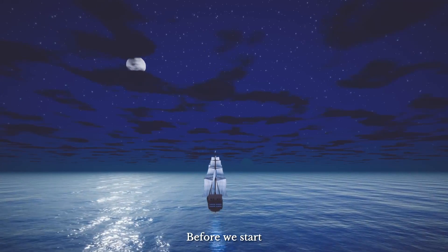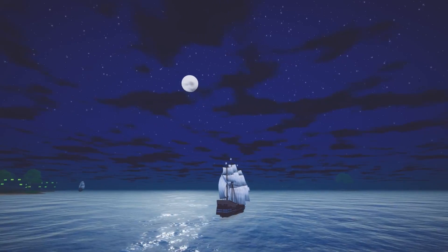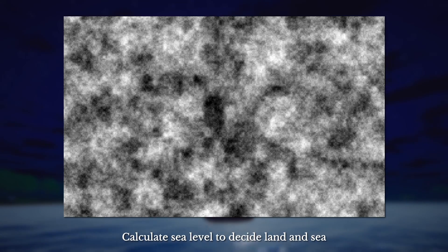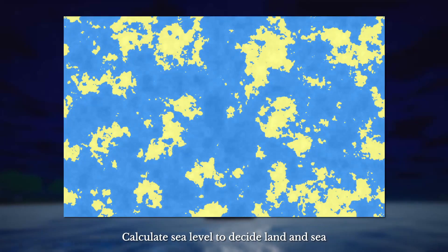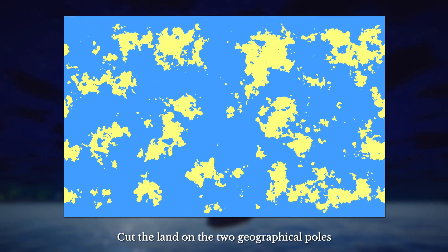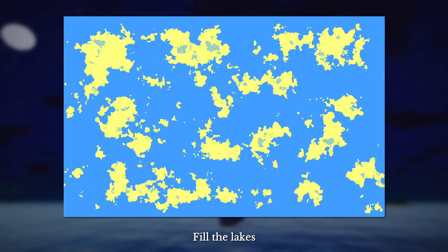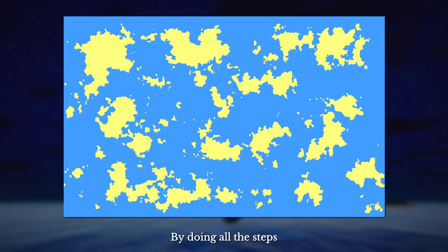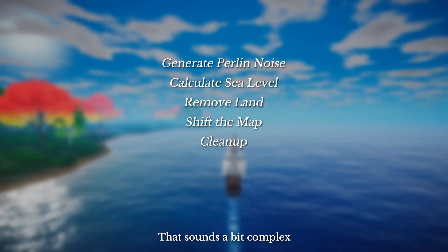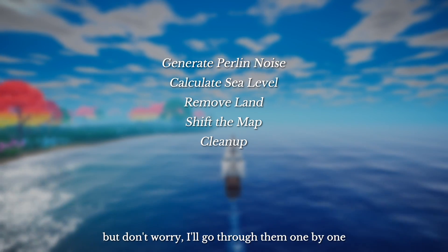Before we start, I want to list the basic steps of how I generate the terrains. First, generate Perlin noise from thin air. Second, calculate the sea level to decide the land and sea. Third, cut the land on the two geographical poles. Fourth, shift the terrain for a better view, and finally fill the lakes. By doing all these steps, we can get the data to generate a world. That sounds a bit complex, but don't worry, I will go through them one by one.